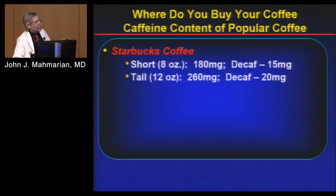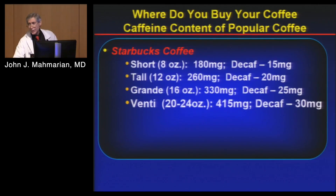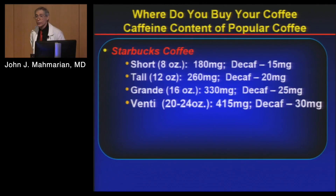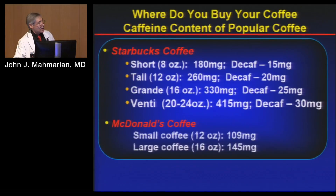Caffeine is an important consideration — a venti Starbucks coffee has 415 milligrams of caffeine. If someone had that an hour ago and they're there for an adenosine or regadenosine study, all that circulating caffeine will bump regadenosine and adenosine off the receptor, and you won't get vasodilation. We generally recommend 12 hours from the last cup of coffee before a pharmacologic stress test. By comparison, a McDonald's coffee is only 145 milligrams.